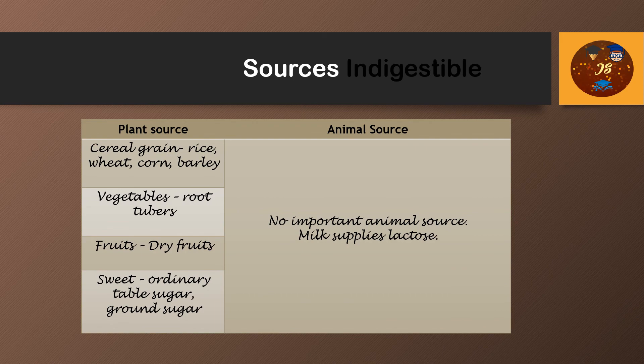Regarding the sources of carbohydrate, there are plant and animal sources. The plant source is the main one — there are almost no animal sources; only milk supplies lactose. From plant sources: cereal grains such as rice, corn, and barley, which are our main food, then vegetables and fruits. So from almost every plant source we can get carbohydrates.